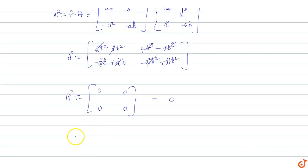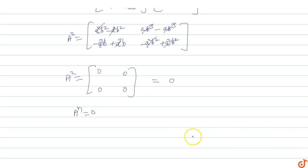So if A^n equals zero, what is the minimum value of n? Since A² equals zero, the minimum value of n equals 2. So this is the answer for this question.